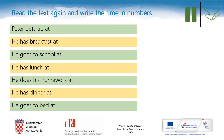Read the text again and finish the sentences in your notebooks — write the time in numbers. You can read the text as many times as you want. Pause the video lesson now. The correct answers: Peter gets up at 10 past 7, has breakfast at half past 7, goes to school at quarter to eight, has lunch at 10 to 1, does his homework at 20 to 3, has dinner at 7 o'clock, and goes to bed at 10 o'clock. Great work.